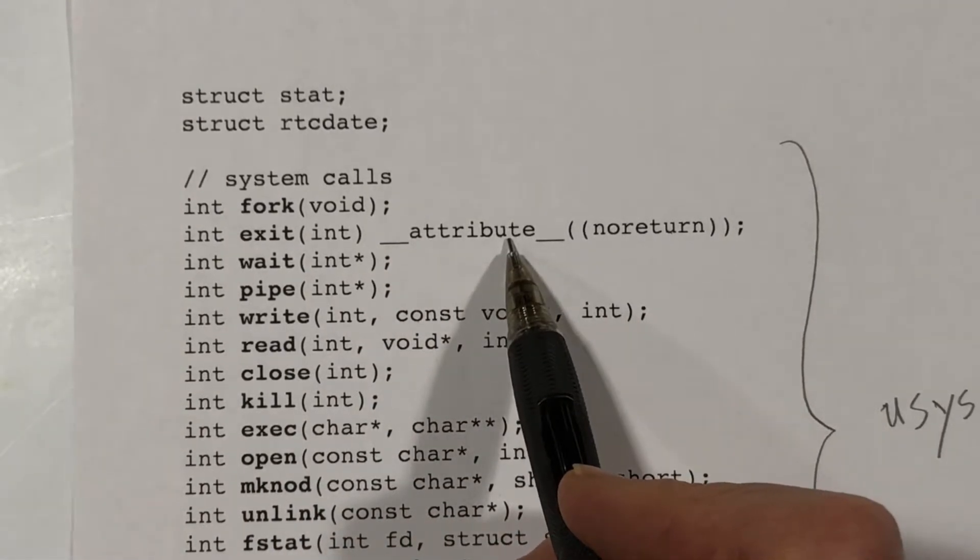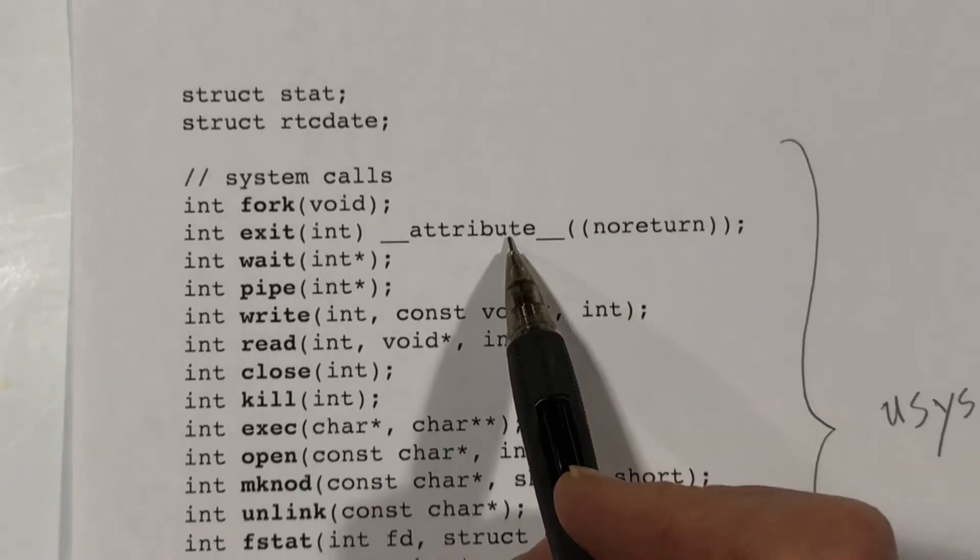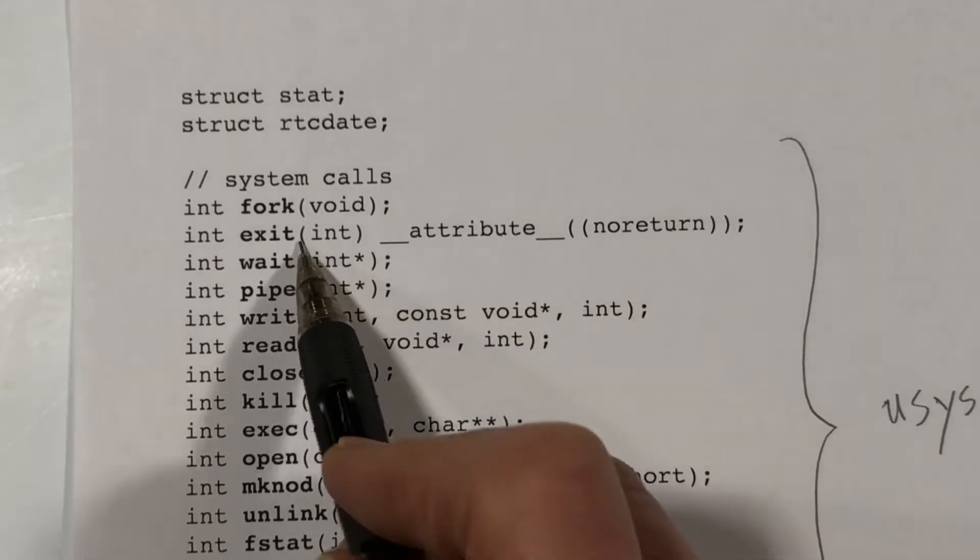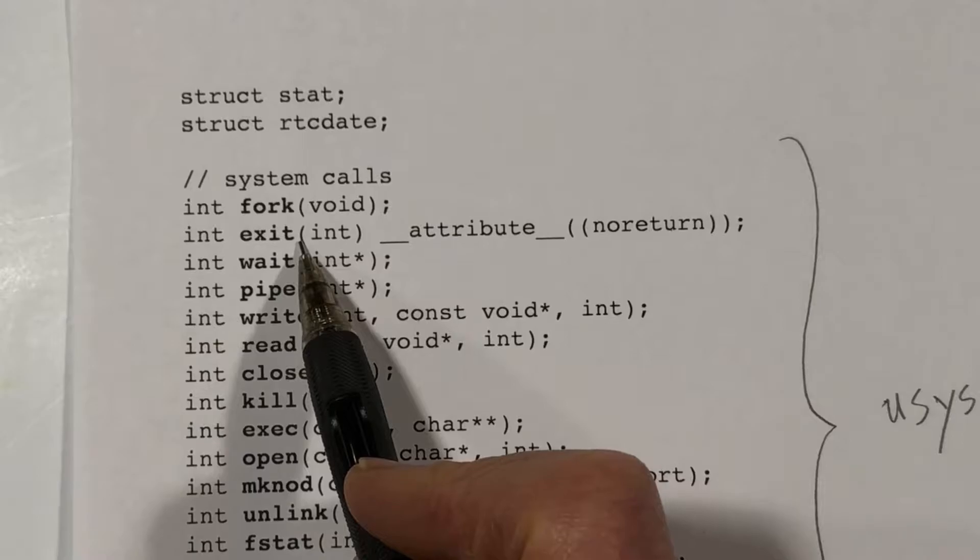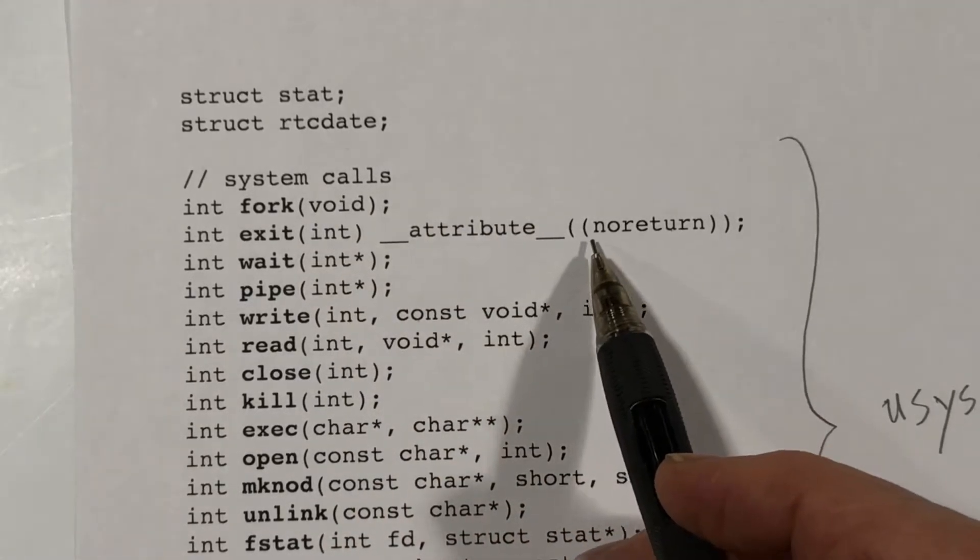This attribute stuff here is a bit of compiler magic that tells the compiler that this particular function is guaranteed never to return, and so this might allow the compiler to do some optimizations.